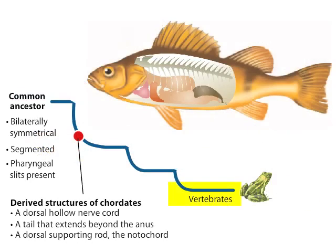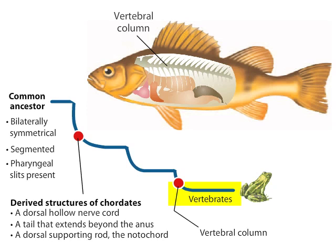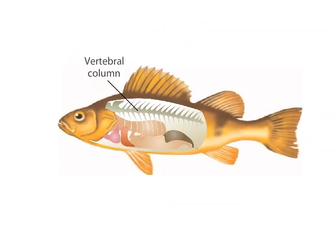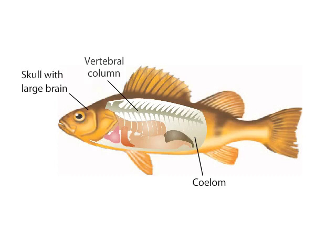The vertebrate group takes its name from the jointed dorsal vertebral column that replaces the notochord during early development. The pharyngeal slits found in the common ancestor of deuterostomes are present at some developmental stage in all chordates, but are often lost or greatly modified in adults. Four other key features, in addition to the vertebral column, characterize the vertebrates: an anterior skull enclosing a large brain, a vertebral column supporting a rigid internal skeleton, internal organs suspended in a body cavity called a coelom, and a well-developed circulatory system driven by contractions of a ventral heart.